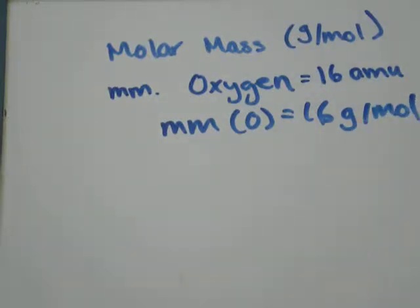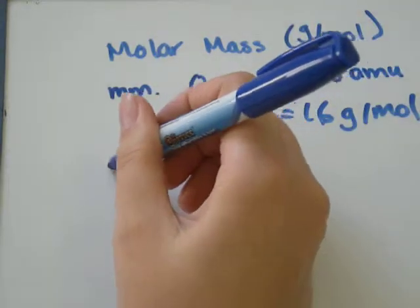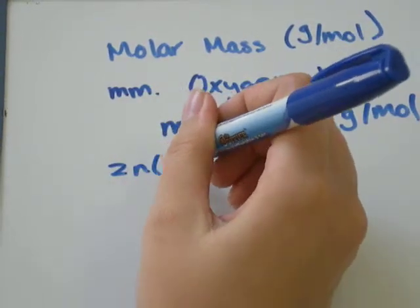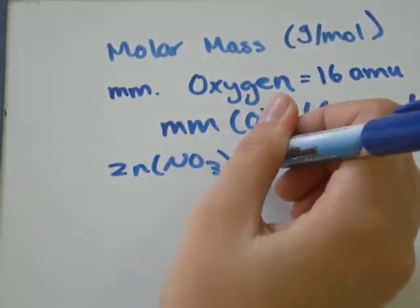So when we're talking about the molar mass of a compound or a substance, well, they're all just made up of individual atoms bonded together. So we're going to do the example of Zn(NO3)2.